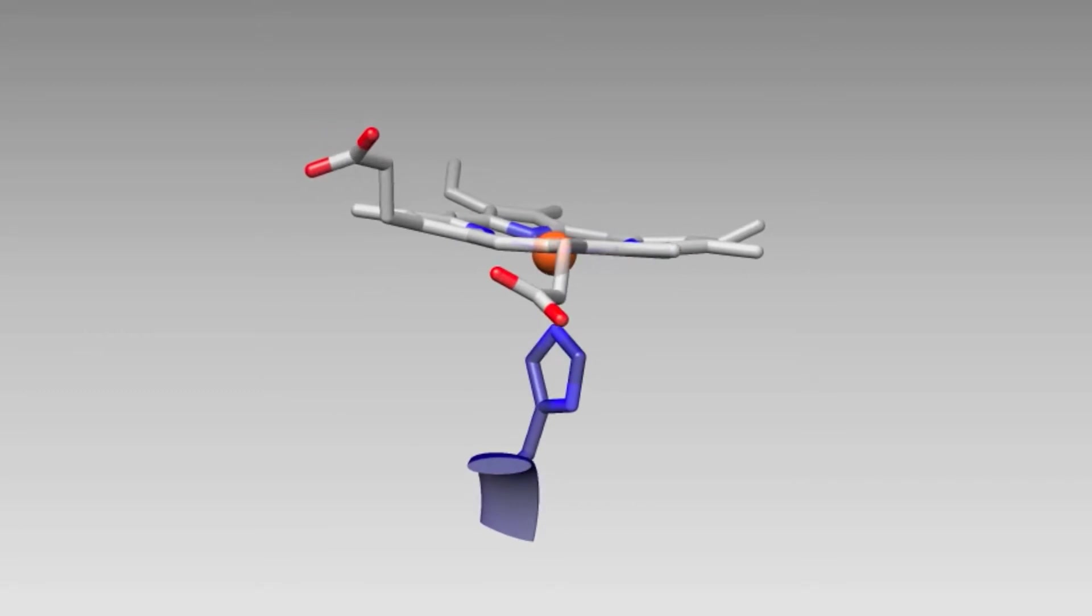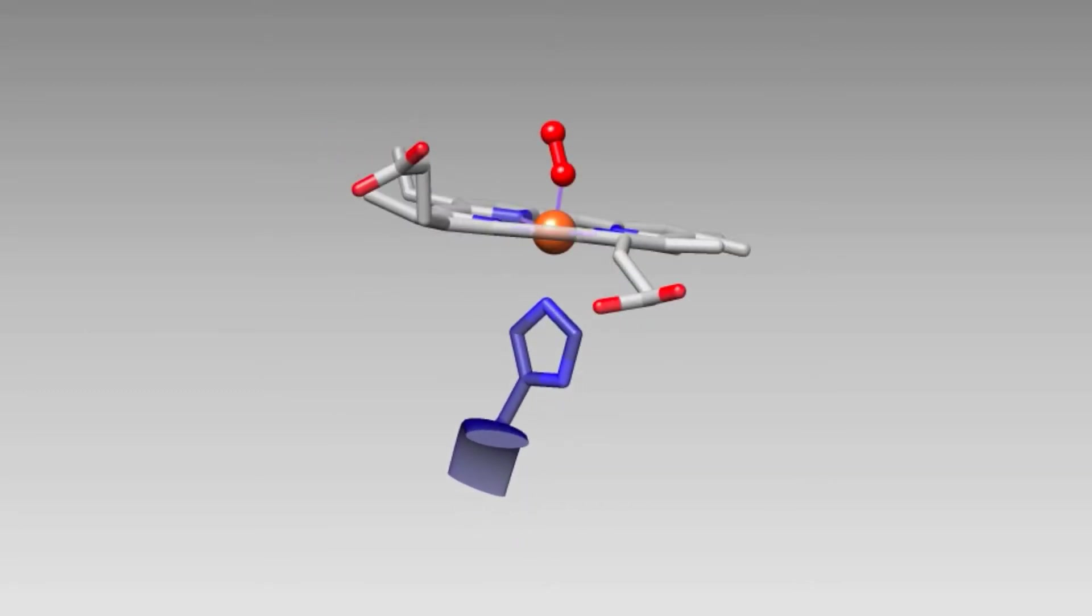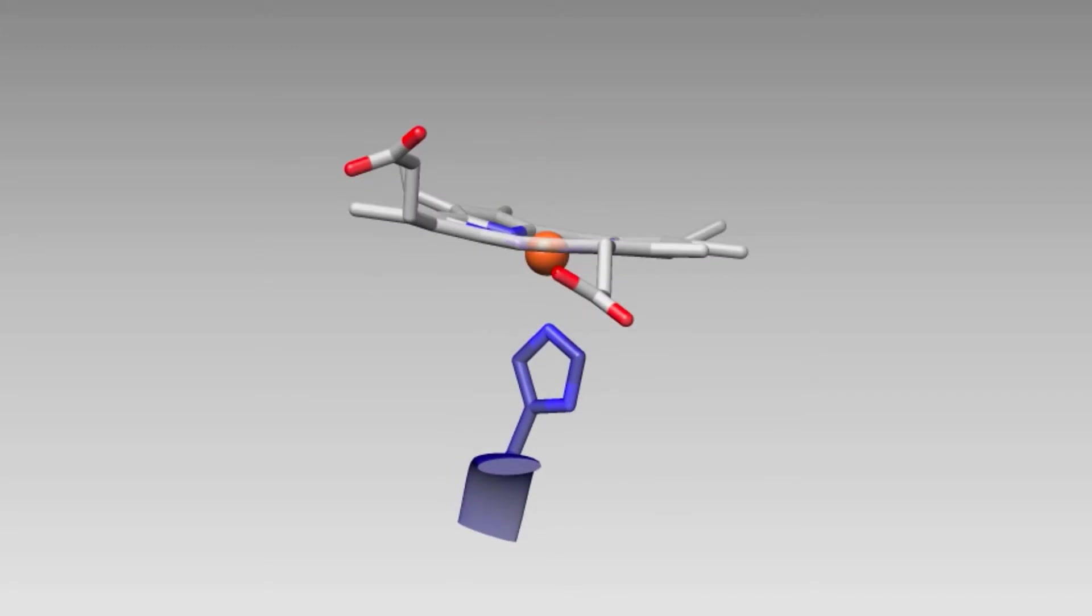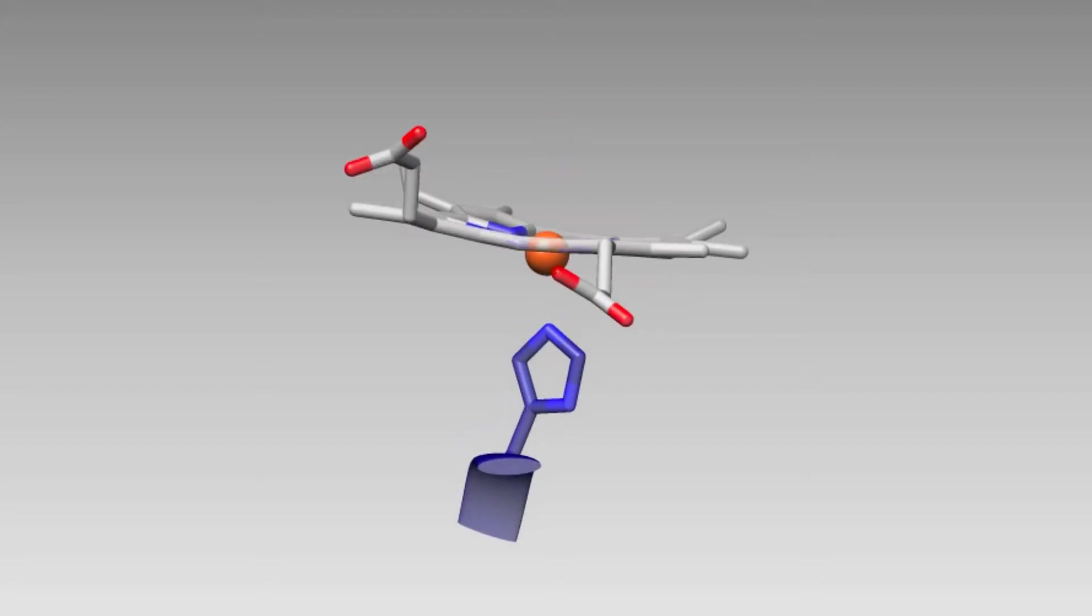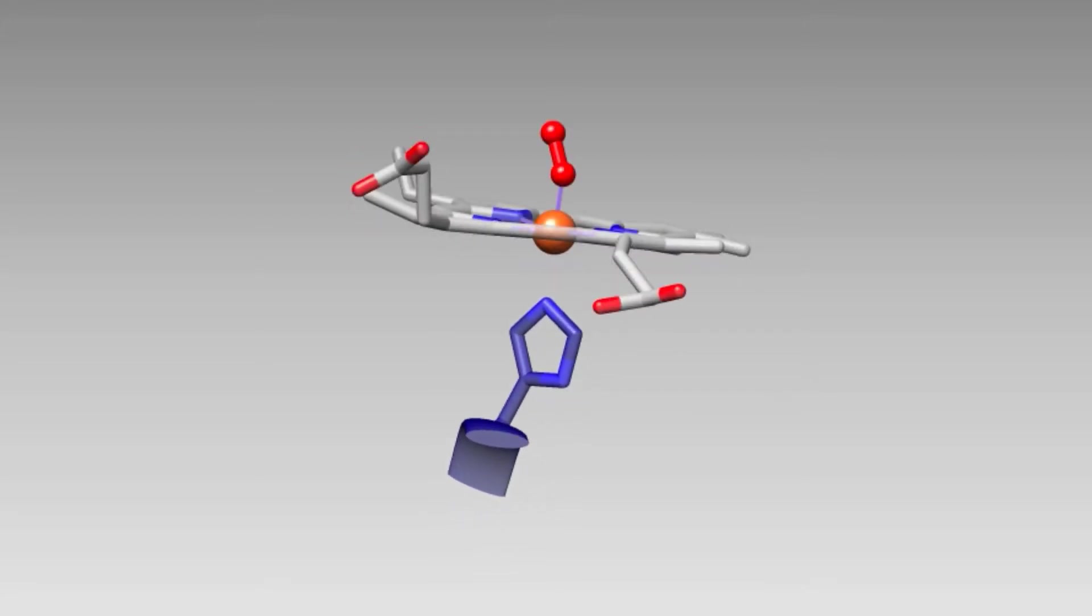As oxygen binds to the iron within the heme group, it changes the spin of the iron to go from high spin to low spin, causing the iron to enter into the same plane as the protoporphyrin ring. The movement of the iron into the plane of the ring causes the histidine to be pulled towards the iron into the pocket of the protein.